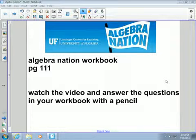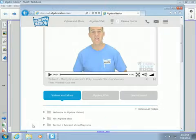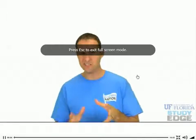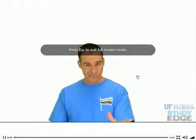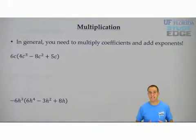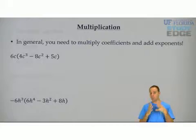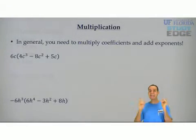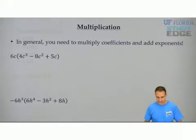This Algebra Nation video will cover workbook page 111. Here we're going to multiply, which really we're going to distribute. The main rule that you need to know is when multiplying, you need to multiply the coefficients — that's the numbers — and add the exponents.